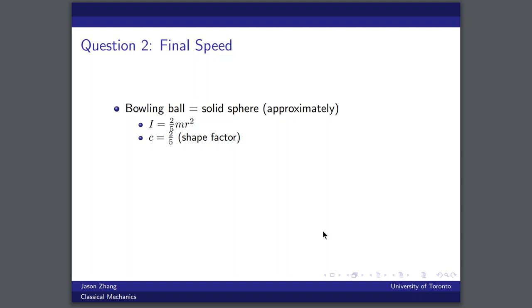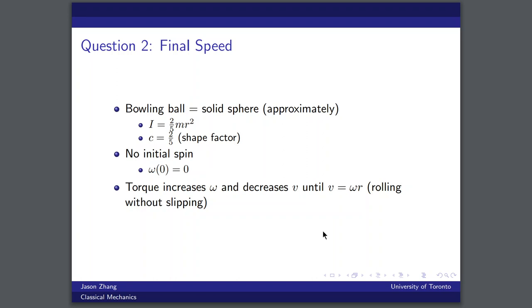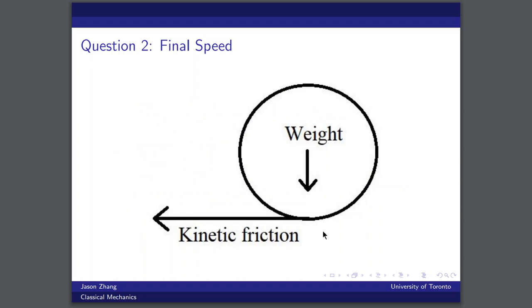So we can say that the bowling ball is a solid sphere approximately, which means that our shape factor is two over five. So I would be equal to two over five MR squared. We know that the bowling ball has no initial spin, which means that omega at zero is equal to zero. And we know that the torque is what increases the angular velocity and it's what decreases the velocity of the center of mass until we get to a point where V is equal to omega R, which means we have rolling without slipping. So just to show this in a very simple drawing, the force of kinetic friction creates a torque around the center of mass, which is the center of the sphere. But this force also causes an acceleration to the left, which causes the speed of the ball to decrease.